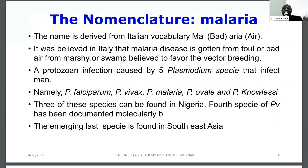Now let's look at the word malaria — its nomenclature. The name is derived from the Italian vocabulary: 'mal,' meaning bad, and 'aria,' meaning air. It was originally believed that malaria disease was contracted from foul or bad air, especially from marshy or swampy areas believed to favor vector breeding. The malaria parasite is a protozoal infection caused by five Plasmodium species: P. falciparum, P. vivax, P. malariae, P. ovale, and P. knowlesi — the last one discovered in Southeast Asia.